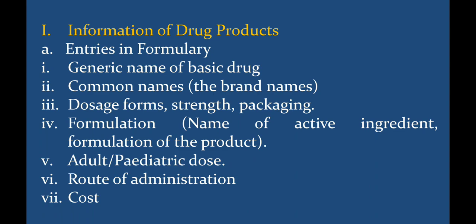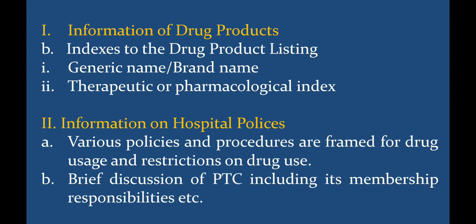The PTC committee decides what is included. Next is the indexes to the drug product listing. In the indexes you write the generic name and the brand name of the drug, then the therapeutic or pharmacological index. Second is the information on hospital policies — various policies and procedures framed for drug usage and restrictions on drug usage, and a brief discussion of the PTC including its membership and responsibilities.